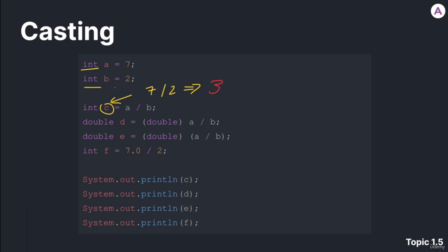But what if we want 3.5? What if I want a decimal answer? What if I want the answer that we get, like if we were to do this in real life? Well, to do that, we can use casting.